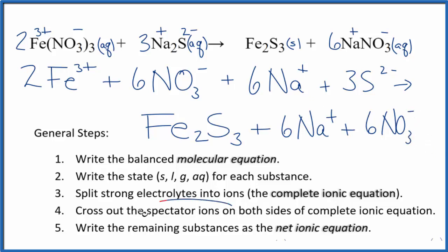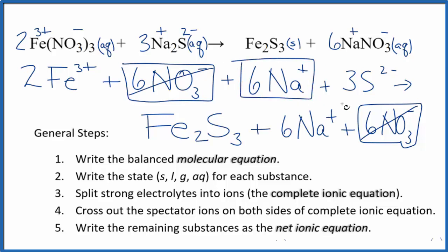Now we can cross out those spectator ions that appear on both sides. So I have my reactants and my products. I see I have six nitrate ions in the reactants and in the products. Those are spectator ions. We can cross those out. Six sodium atoms again in the products. Spectator ions, they're crossed out. What's left, that's going to be the net ionic equation here for Fe(NO₃)₃ plus Na₂S. I'll clean it up and write the states in. We'll have our net ionic equation.